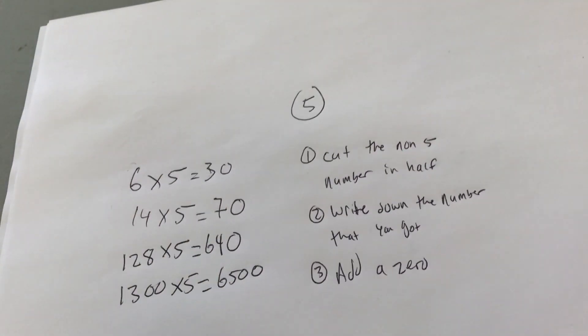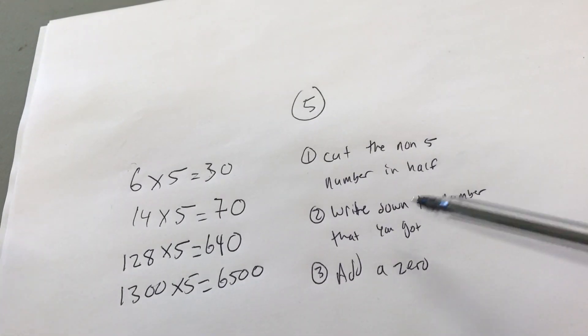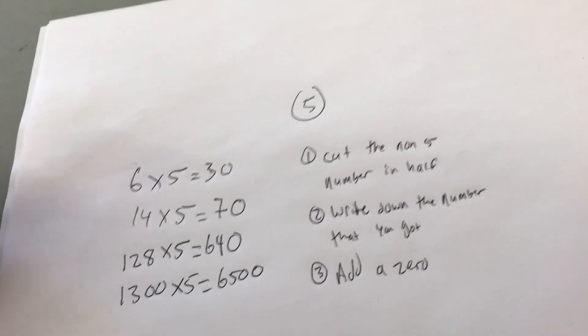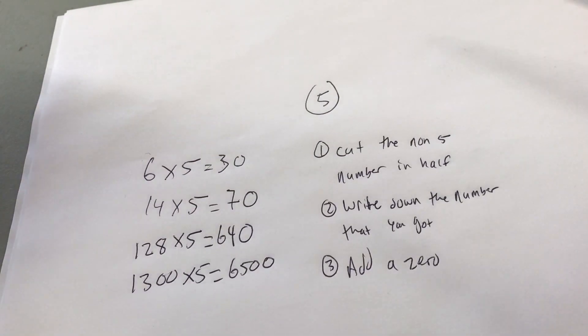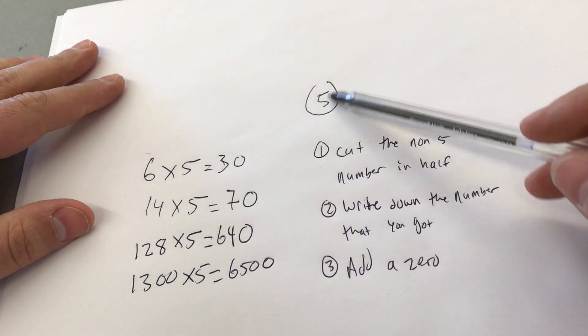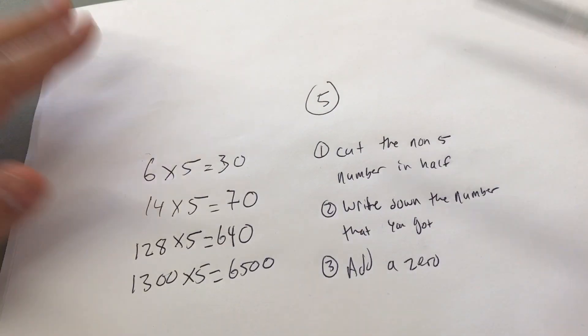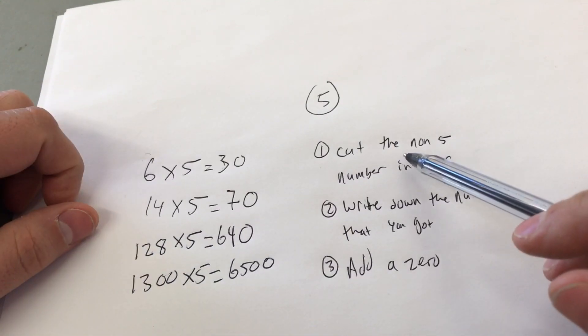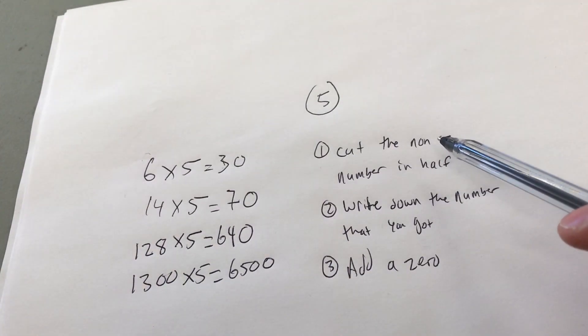And it's literally that simple. That is how to multiply any number by 5 fast. I hope that you've enjoyed this video. Be sure to give it a thumbs up if you liked it. Let me know what your tips are for multiplying by 5 in the comment section down below. And above all, please be sure to subscribe for more great videos just like this one. And that's all I have for you today. Thanks for watching.